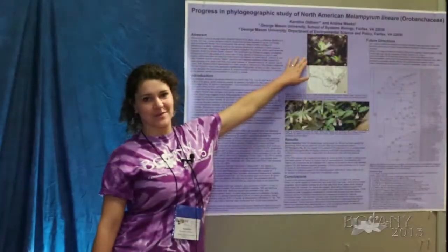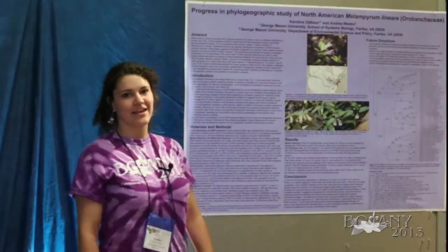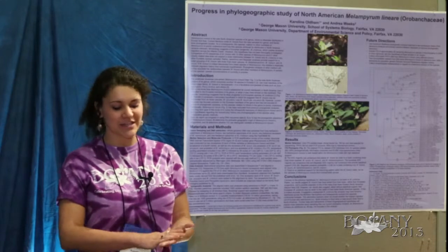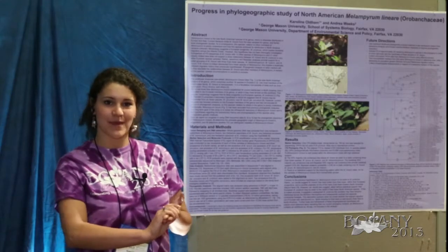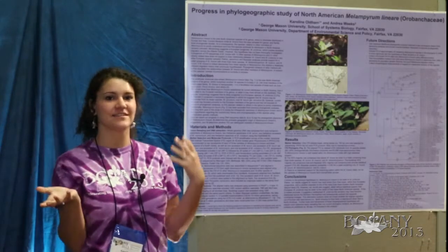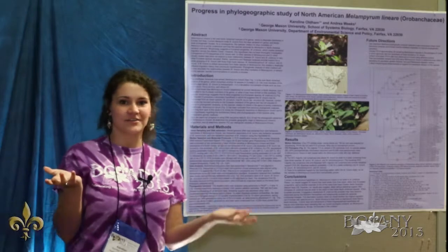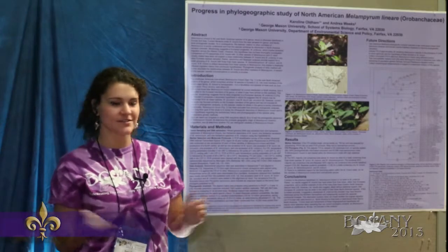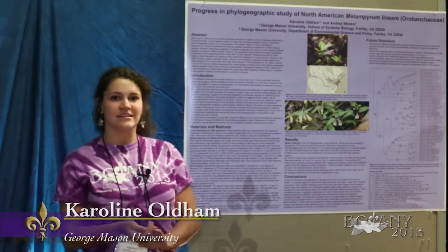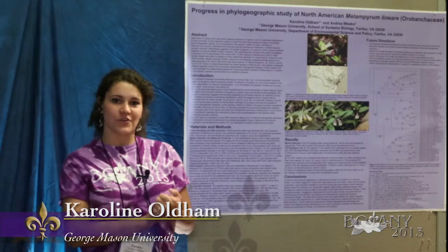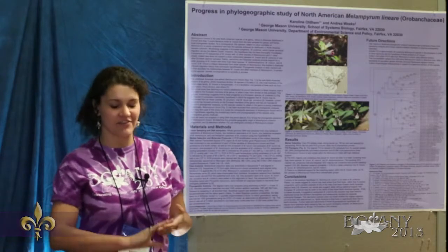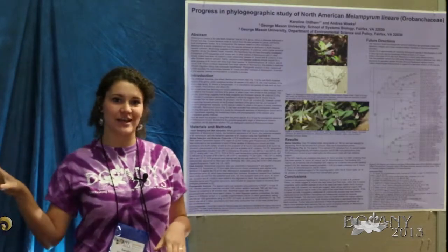This species is Melampyrum lineare, and it's an Orobanchaceae. It's a really interesting plant. It's actually a hemiparasite, so it photosynthesizes but also parasitizes the roots of trees. And it's the only North American species in its genus, with everything else found in Europe and Asia.